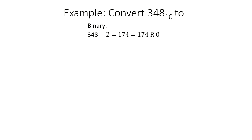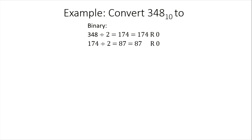So, 348 divided by 2 is 174, remainder 0 — we have no remainder. Next, the quotient is 174, so we will divide 174 by 2. We have 87, remainder 0.